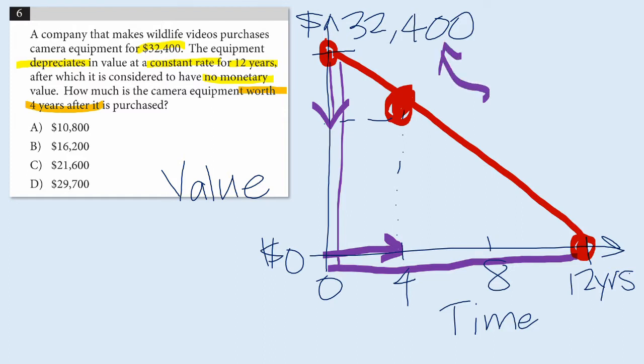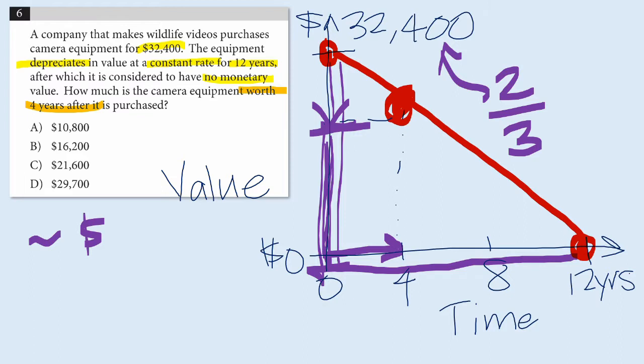If this is the value right here of the equipment after four years, what would two-thirds of $32,400 be? Okay, well let's just totally roughly estimate this. One-third is going to be about $11,000, right? Because if I say the equipment's worth about $33,000, then one-third is about $11,000.